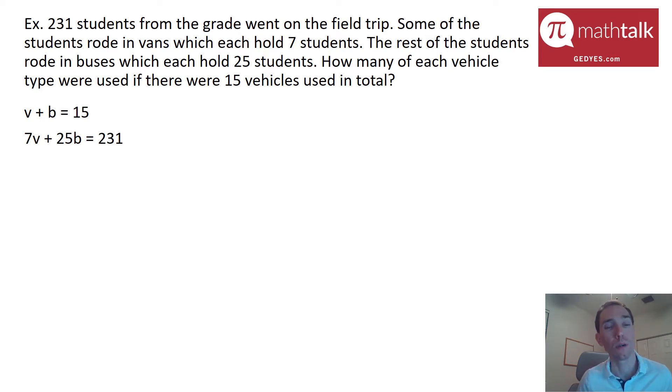However, in order to really eliminate one of the variables, you need the coefficients to either be the same for the one variable or opposites, where it's the same number, just one is negative, one is positive. In this case, that isn't like that. The v's are 1 and 7, the buses or b's are 1 and 25. So what you can do in these situations is you can actually pick one of the variables you want to eliminate and then multiply one of your equations by some factor, or in some cases, you need to multiply both equations by a factor in order to get those coefficients to be the same.